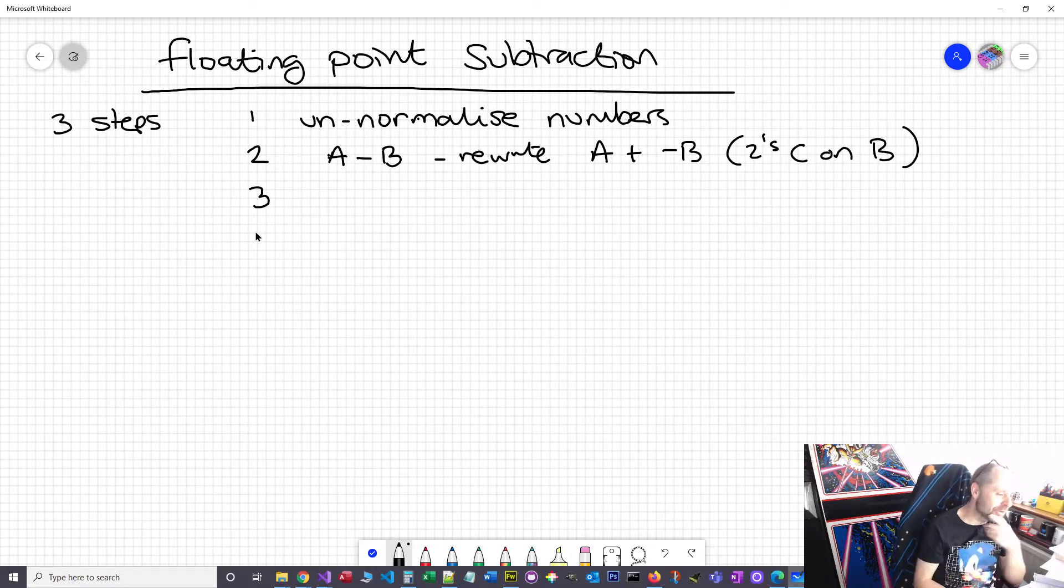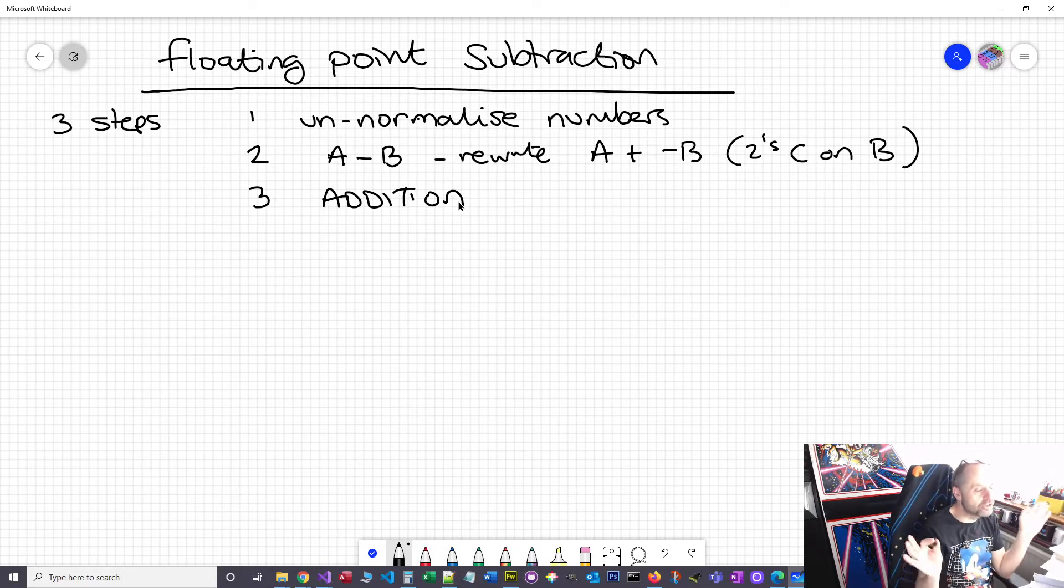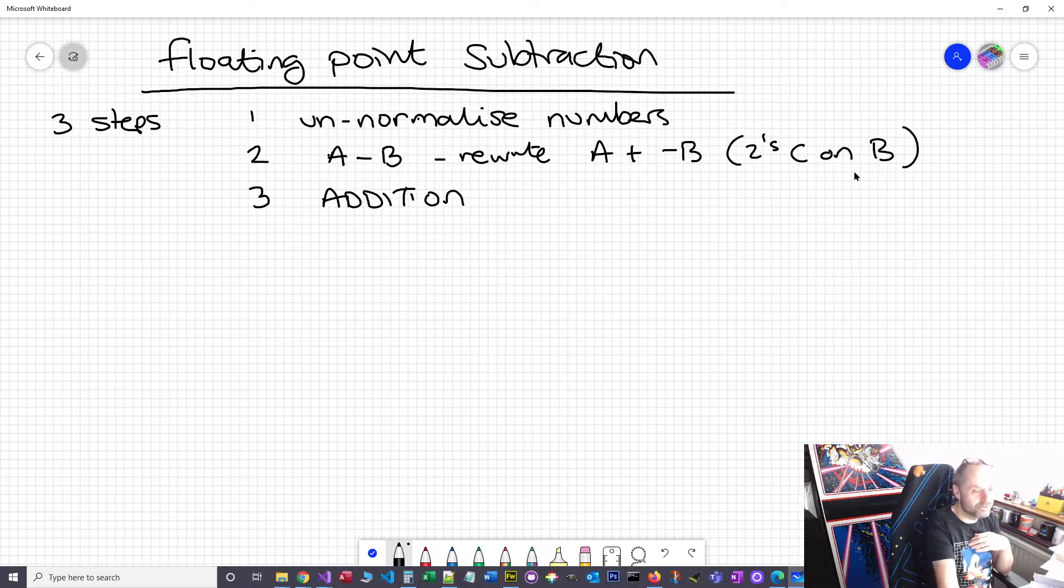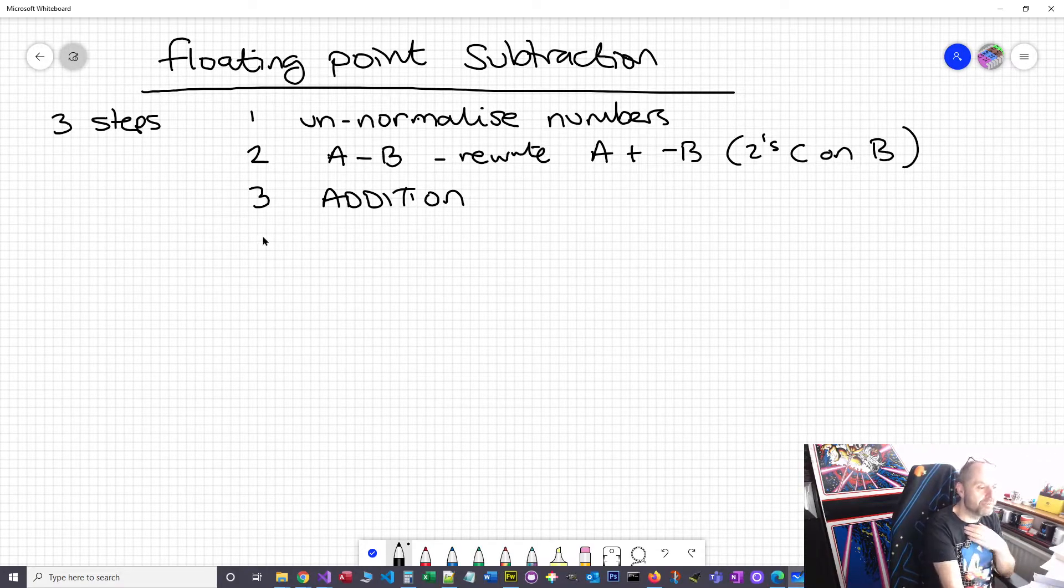Step three - there are four steps to avoid subtraction. Then we just perform the addition, because we're not going to do subtraction unless you're insane. I would always tell you to reformat the algebra and do addition. And then the fourth step is to re-normalize the result.